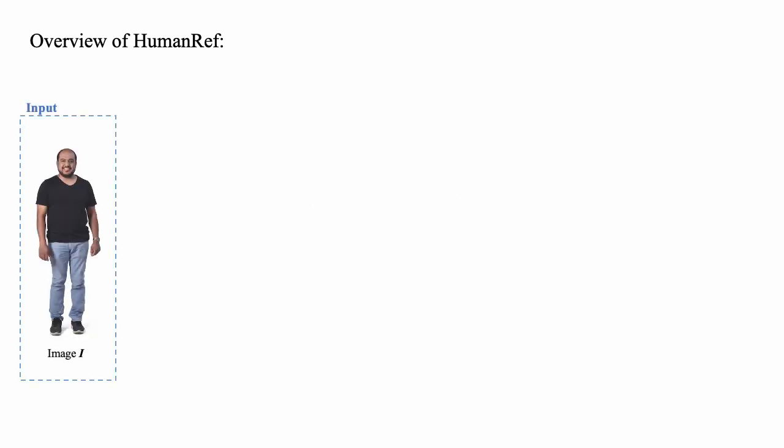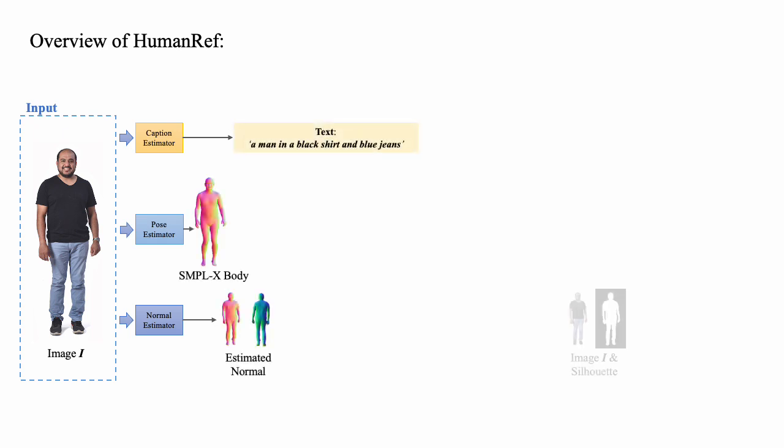Given an input image, we first utilize existing estimators to derive the corresponding text caption, skinned SMPLX body, front and back normal maps, and silhouette.